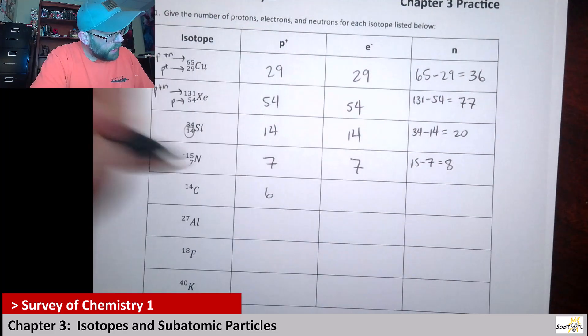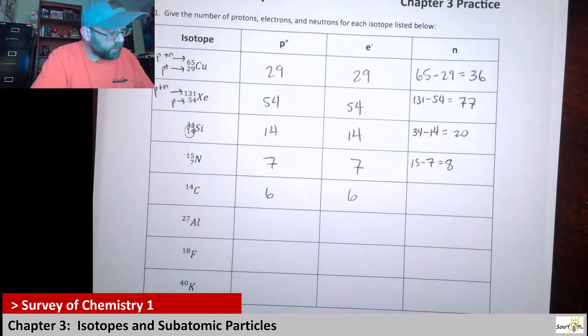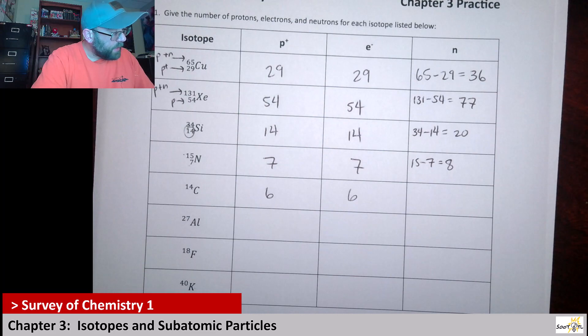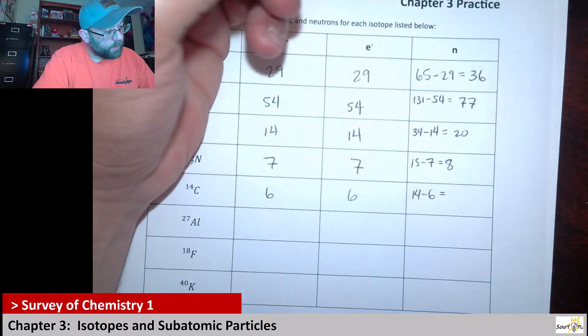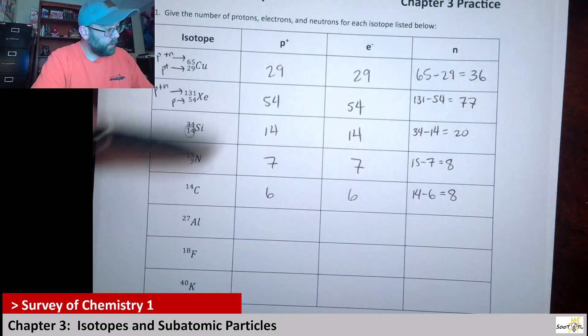So we know that this is 6 and we know it's neutral, so electrons there's also 6 of those. Then to get our neutron, we would just say 14 minus 6, so that'd be 8. These two guys actually have the same number of neutrons.